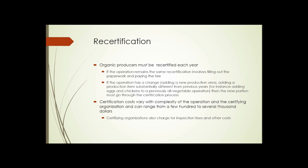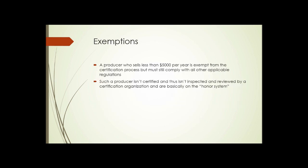Certification costs can range from a few hundred dollars to several thousand dollars, and many of these fees must be paid every year. Certifying organizations also charge inspection fees and other costs, so being certified organic can be both time-consuming and costly. There are exemptions: a producer who sells less than $5,000 per year worth of goods is exempt from the certification process, but must still comply with all other regulations regarding what can be applied to crops, as laid out in the handbook. Such a producer isn't certified and thus isn't inspected by a certifying organization, so they are essentially on the honor system.